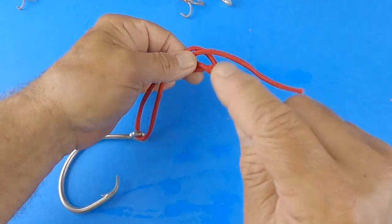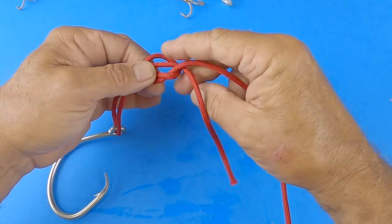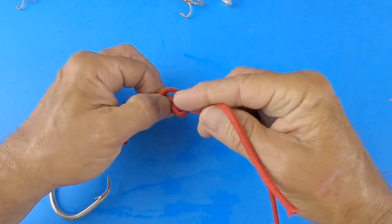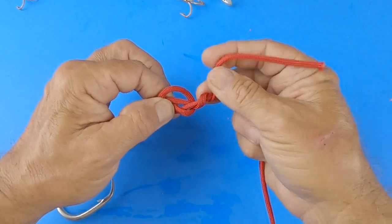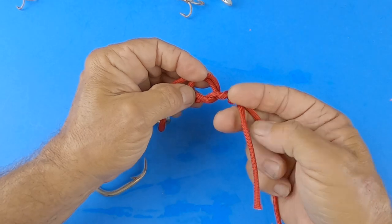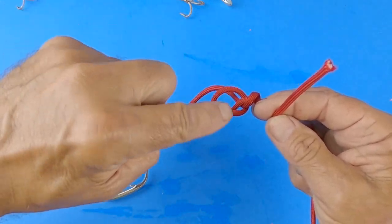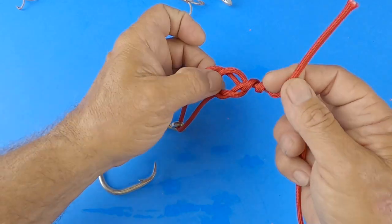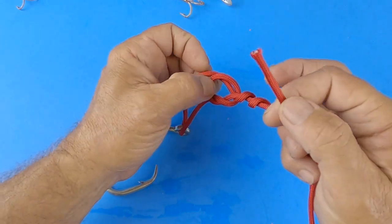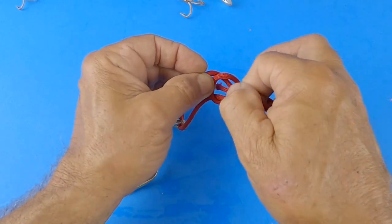Then we're just going to hold right here at the knot. We're going to take our tag end and we're going to wrap it three times: one, two, three times. And then we're going to go back through both loops that we created. We created the big loop here and then we have the smaller loop on the overhand knot. Then we're going to take the tag end and stick it through both loops, but we're going to do it in the opposite direction.